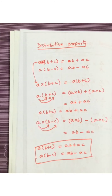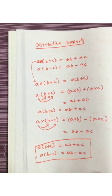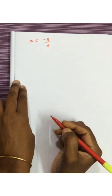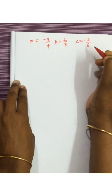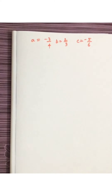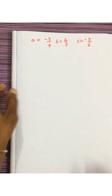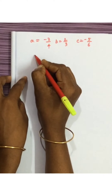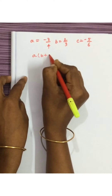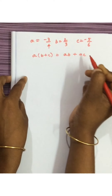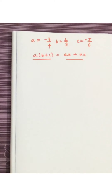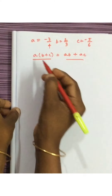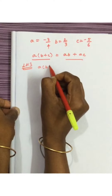Now we are going to solve a few problems using this distributive property — the first one is from your book. I am taking three rational numbers: A is 3 by 4, B is 2 by 3, and C is minus 5 by 6. I am going to check the distributive property, which is A into B plus C equal to AB plus AC. First I will check the left hand side and then the right hand side, and compare whether they are the same. So what is the left hand side — written as LHS — is A into B plus C.